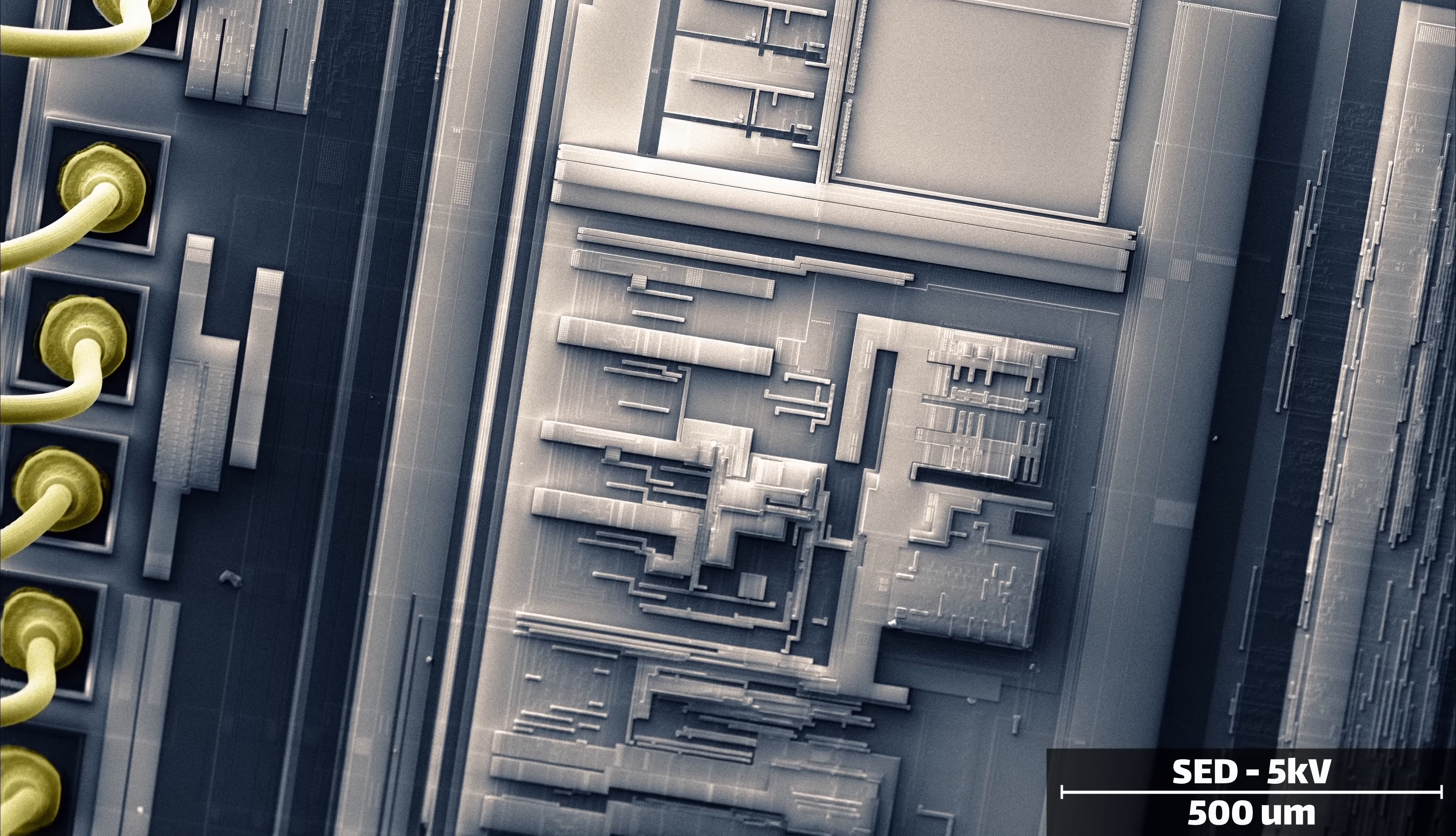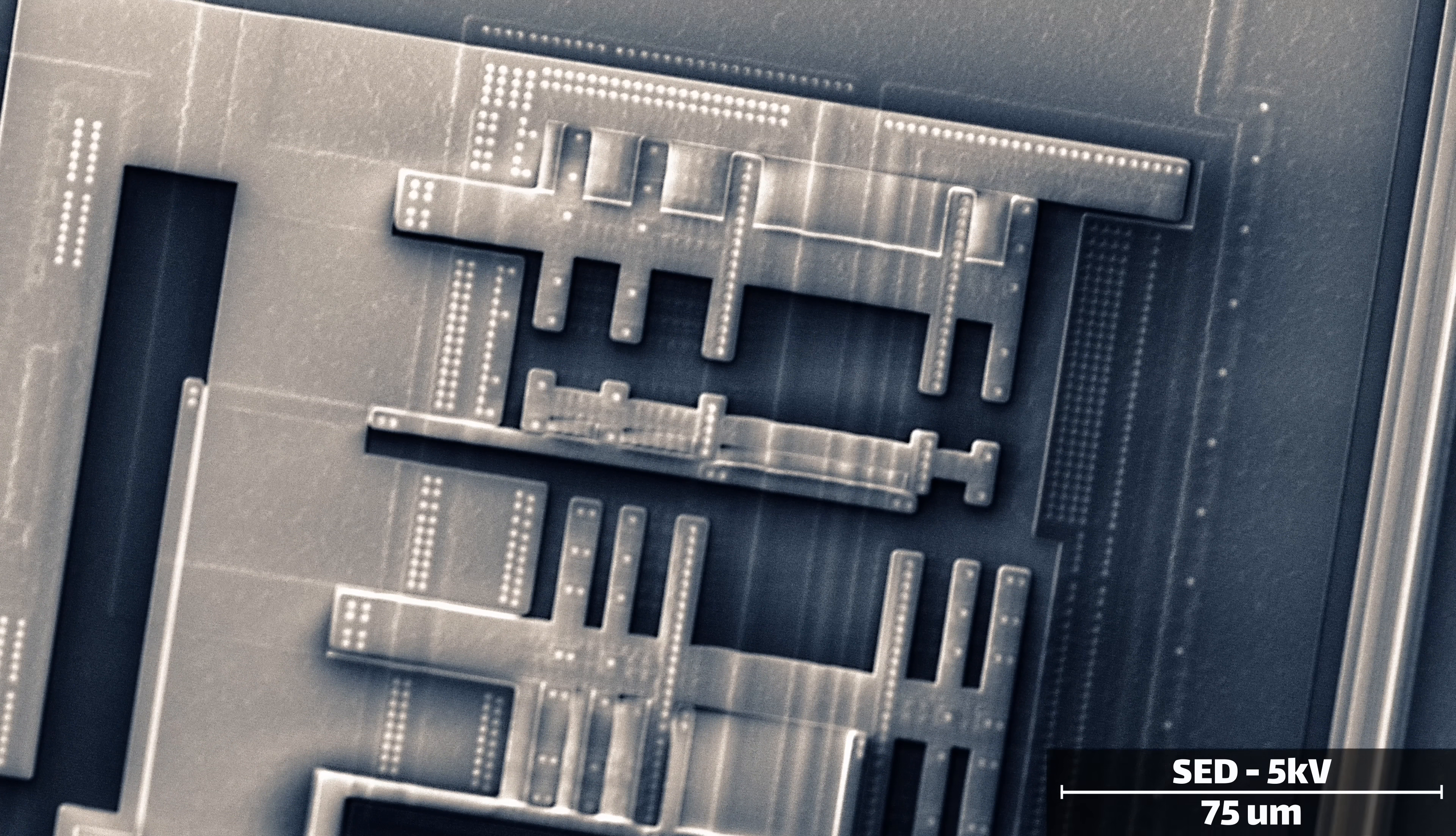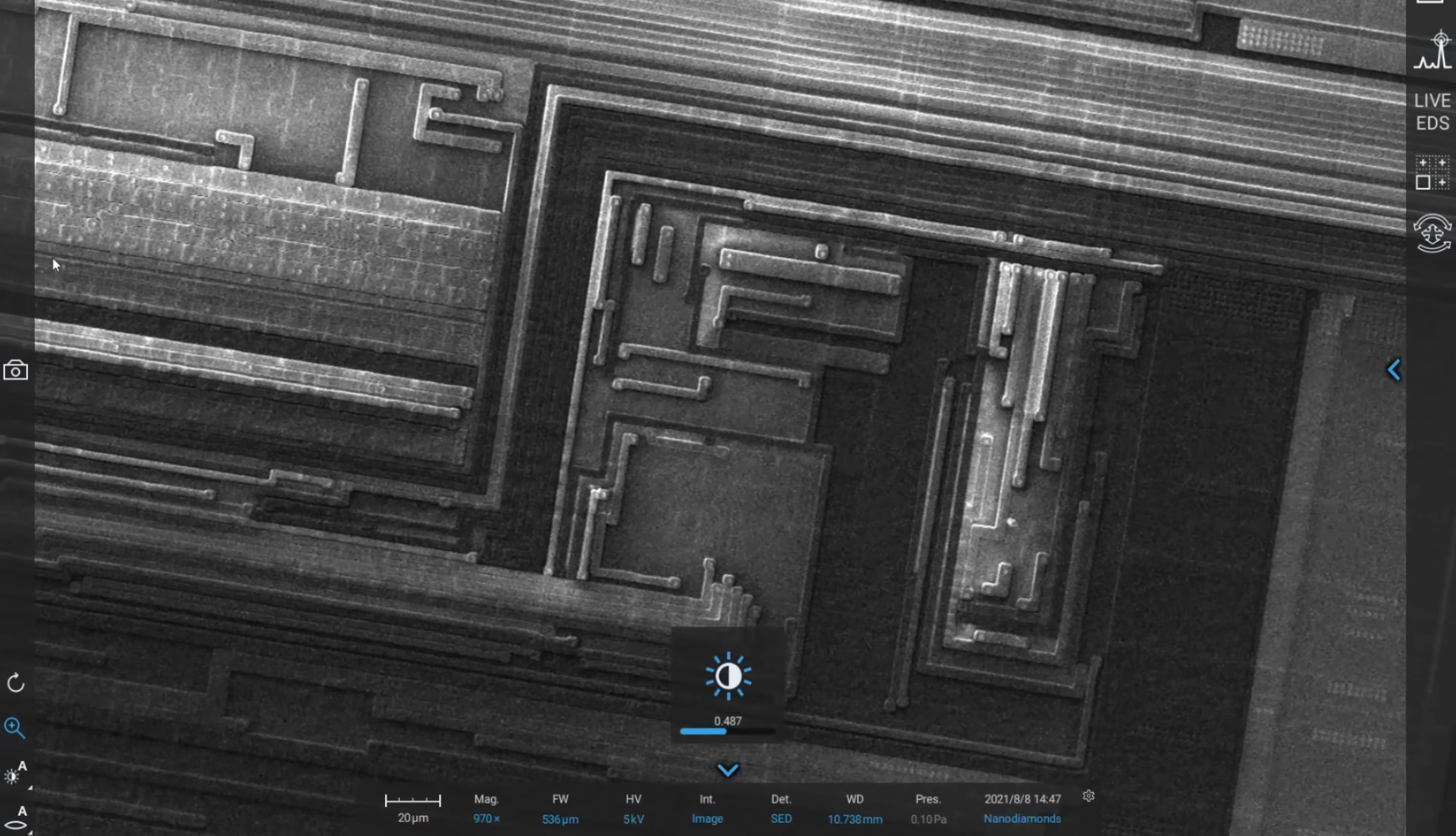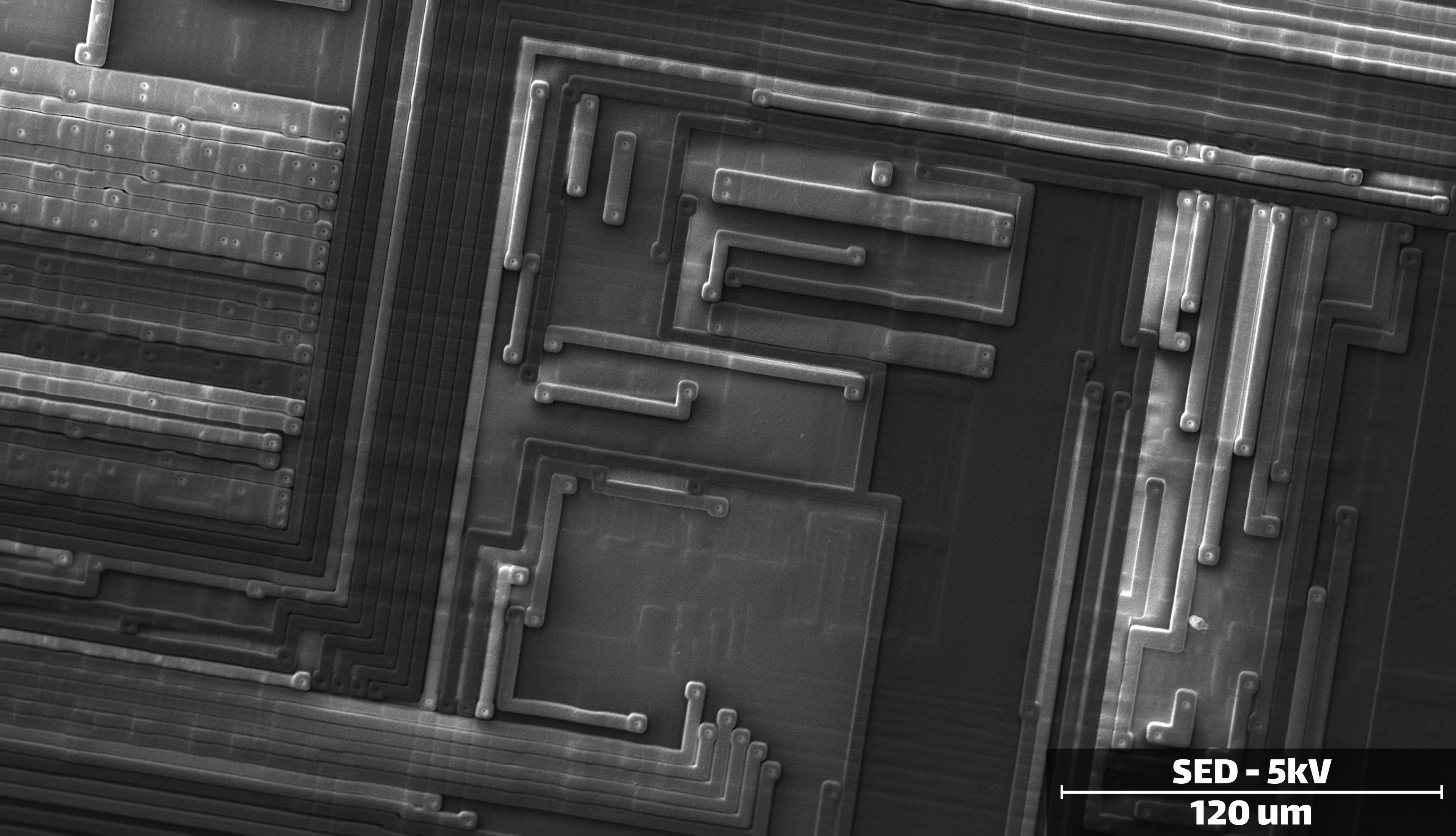The small circles you see scattered around are vias, vertical plugs of metal that connect different layers together. And while all the features feel very geometric and mechanical, once you zoom in enough, everything is slightly rounded and surprisingly organic feeling. The truth of the matter is that it's just hard to manufacture precise right angles at this scale, and everything starts to get a bit rounded.